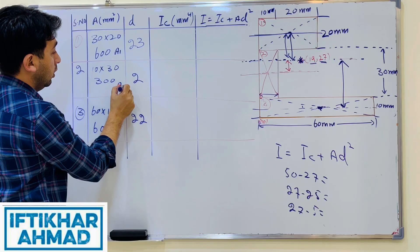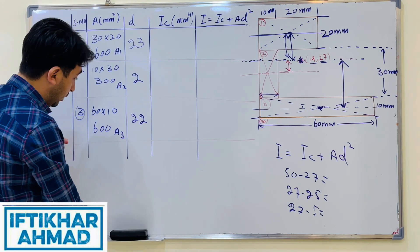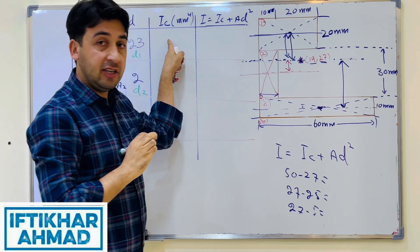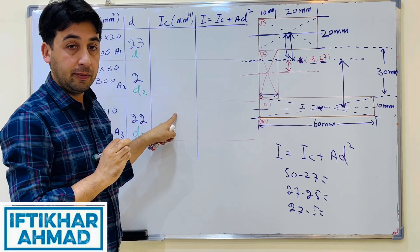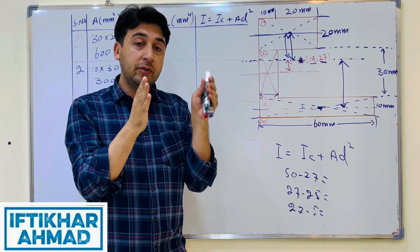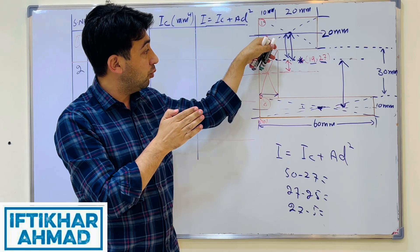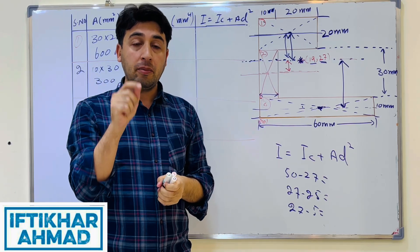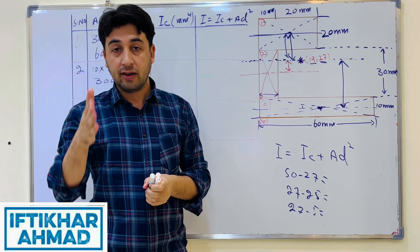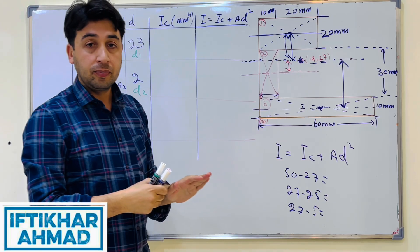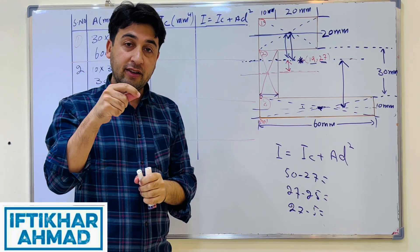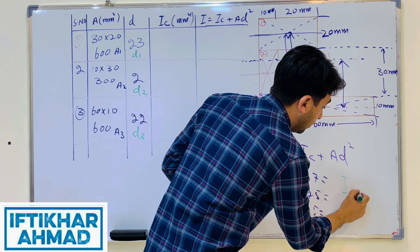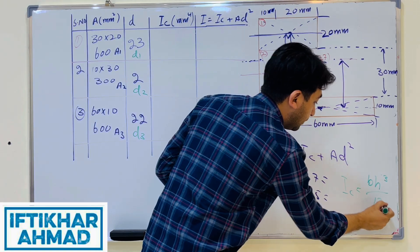Now we have A1, A2, A3 and D1, D2, D3. Next we find IC1, IC2, and IC3 — the moment of inertia of each rectangle about its own centroidal axis. For a rectangle, the formula is IC = BH³/12. All three sub-shapes are rectangles, so we apply this formula to each.